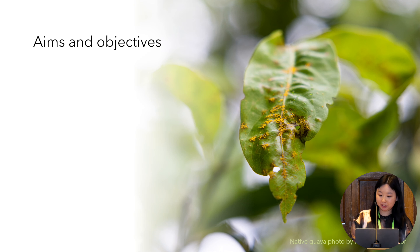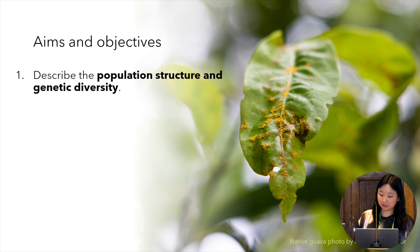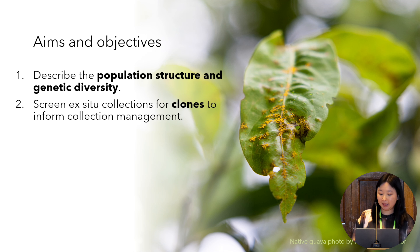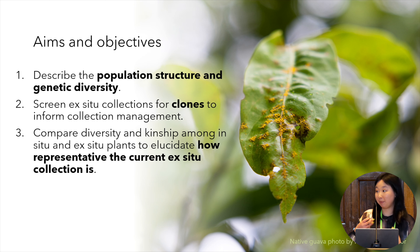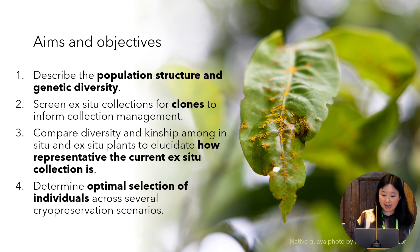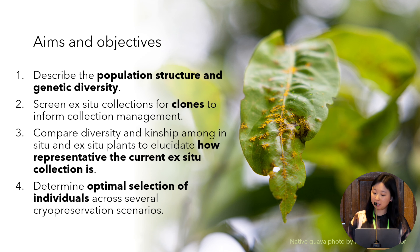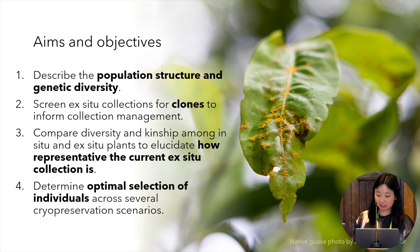The aims and objectives of this project were to describe the genetic health, population structure, and genetic diversity across their known distribution; screen the ex-situ collections at the Australian Botanic Garden Mount Annan and the Boudere Botanic Gardens for clones to inform collection management; determine and compare diversity and kinship among in-situ and ex-situ plants to understand how representative the current ex-situ collections are; and determine optimal selection of individuals across several cryopreservation scenarios.